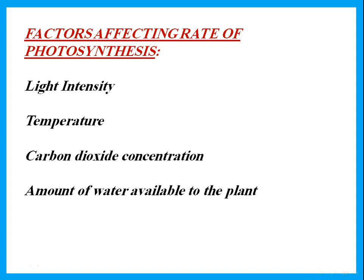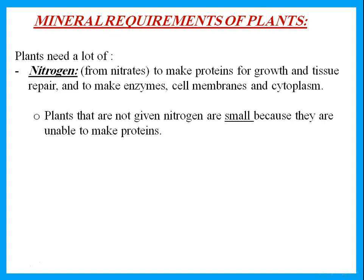What are the factors affecting the rate of photosynthesis? I will have faster photosynthesis if I have more light intensity, a higher temperature, more carbon dioxide concentration, and more water available to the plant. All of these will help to increase the rate of photosynthesis.